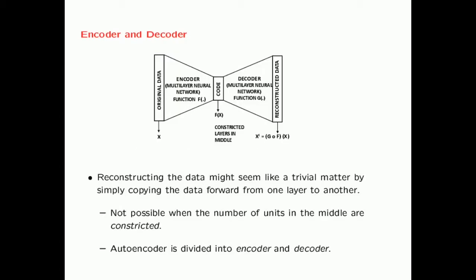In general, the number of units in the middle are constricted. The portion before the constriction is referred to as an encoder, which learns the reduced code corresponding to the activations of the innermost layer. The portion after the constriction is referred to as a decoder, which reconstructs the reduced representation of the points into the original representation. This particular architecture provides a reduced representation of the dataset, very similar to dimension reduction techniques like singular value decomposition and principal component analysis. In fact, as we'll see in a later lecture, SVD is a special case of autoencoders.